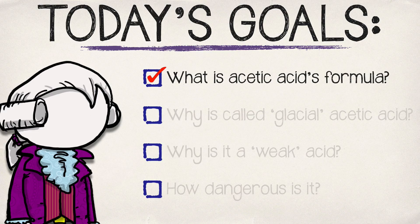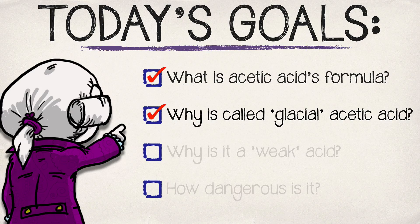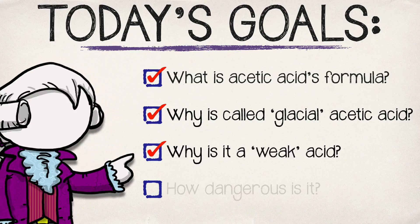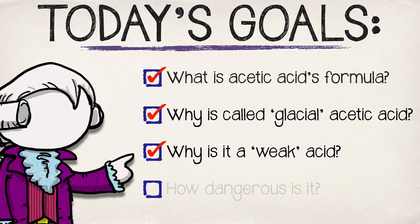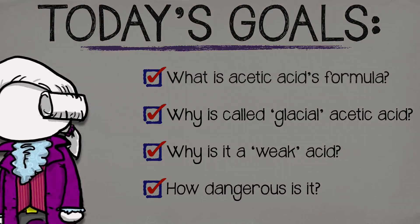So how do we do? We explained what acetic acid's formula was. We talked about why it's called glacial acetic acid. Pretty cool. We explained what a weak acid is and hopefully that's a review. If not, you can check out one of my other videos to dig a little deeper. And finally, there are some pretty gruesome examples of how dangerous concentrated acetic acid can be.